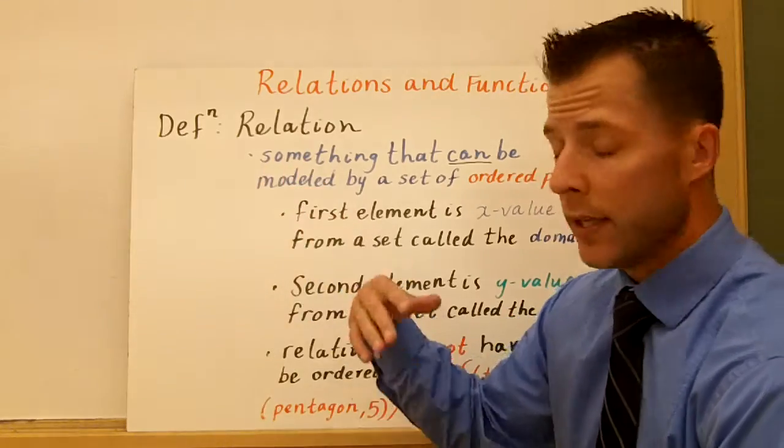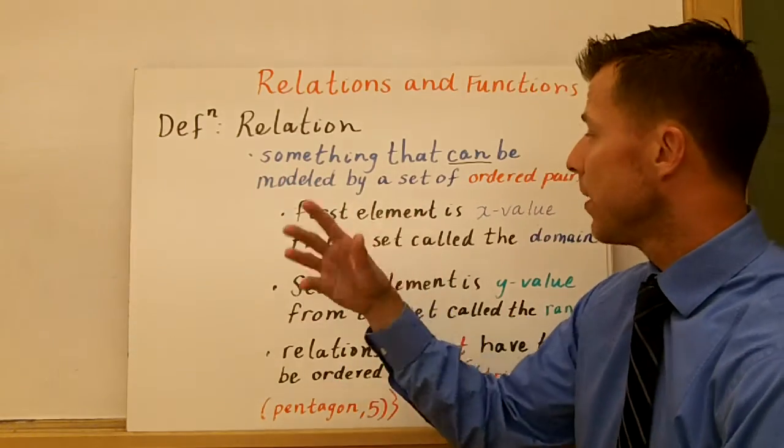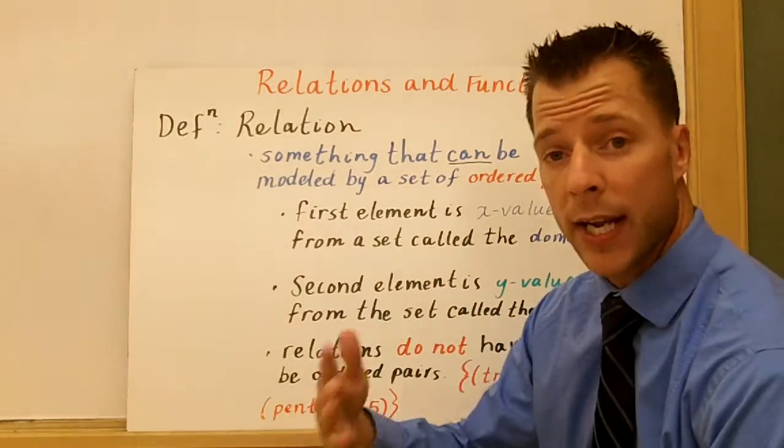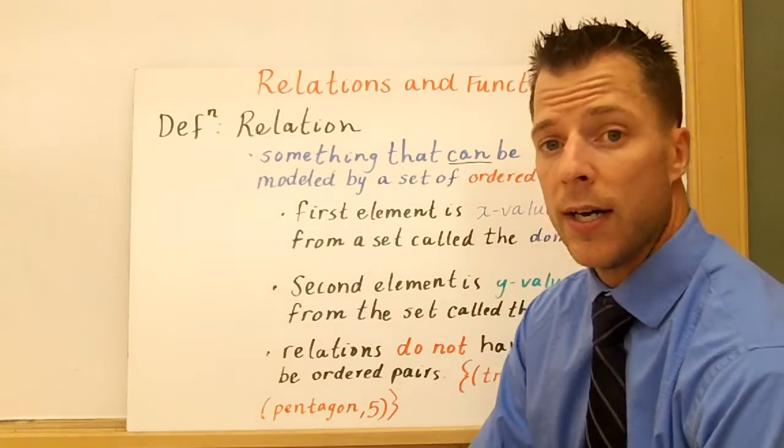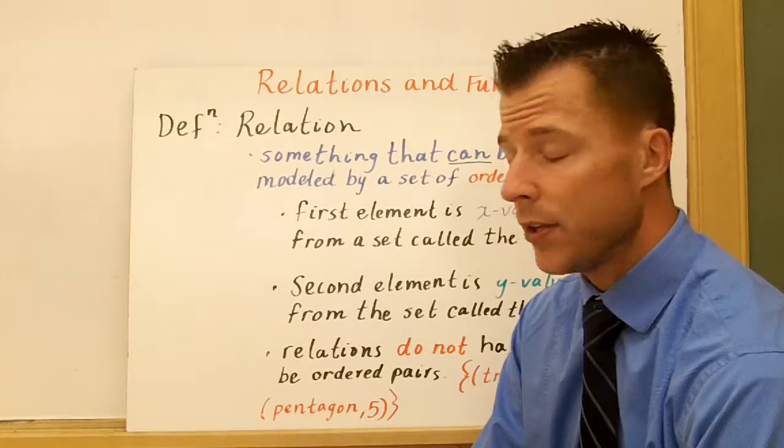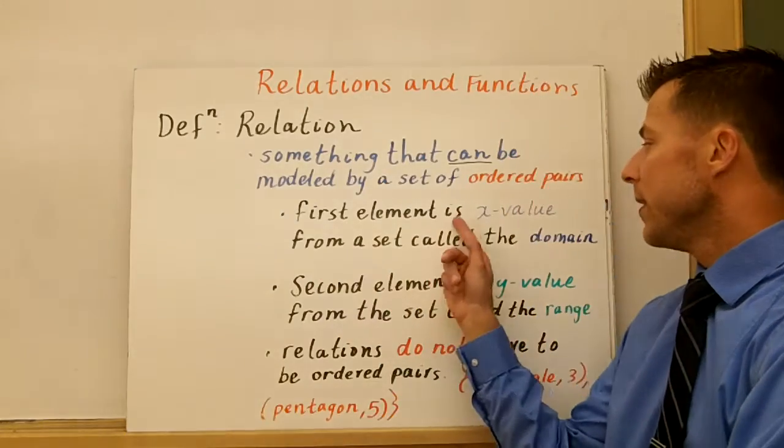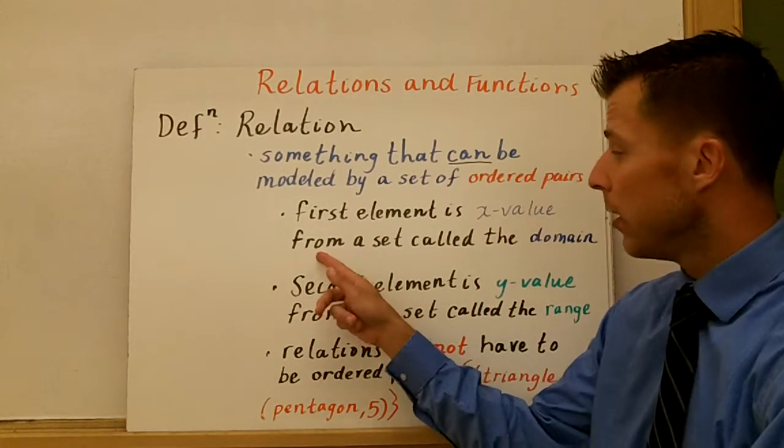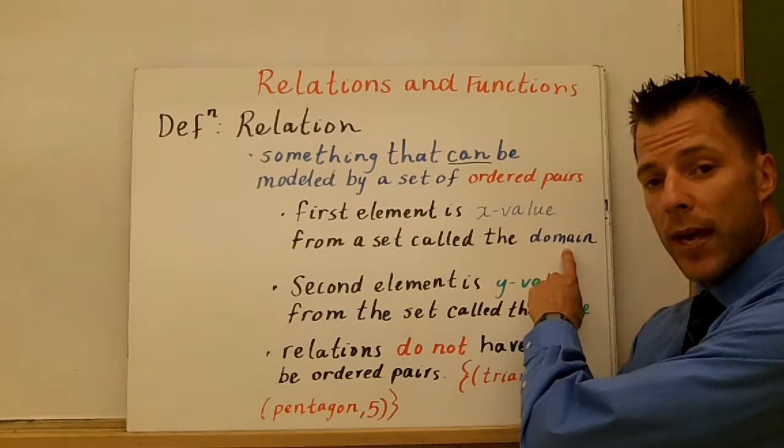A relation is something that can be modeled by a set of ordered pairs. It can be, it doesn't always have to be. But the idea here is an ordered pair you can think of as an x and y value. So that first element is the x value in that ordered pair, and it comes from the set of the domain.